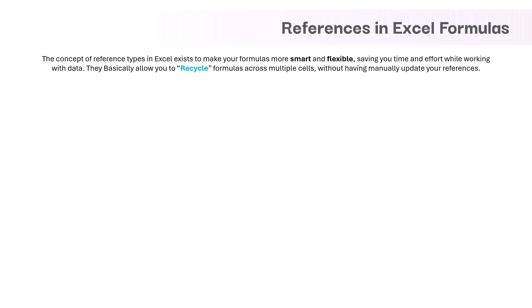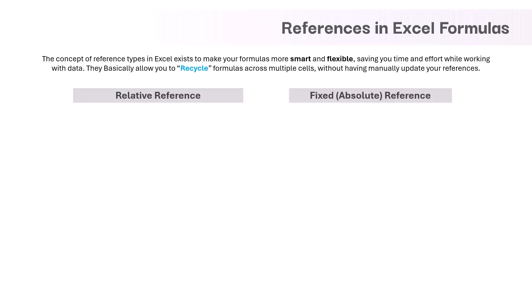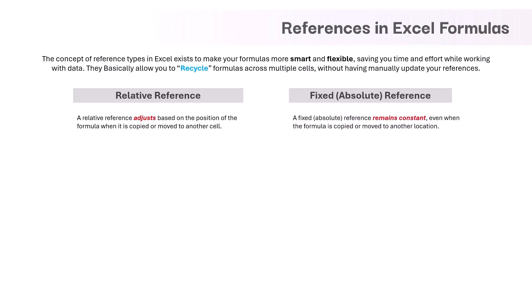We have two types of references in Excel formulas and functions. First is relative reference, and second is fixed or absolute reference. In relative reference, the cell references will automatically change based on the position of the formula when it is copied or moved. But in absolute reference, the cell references will never change even when the formula is copied or moved. In relative reference, the formula has normal cell references like A1 or B2. But in absolute reference, we use the dollar sign as a special symbol, and it can be used before the column, the row, or either of them.